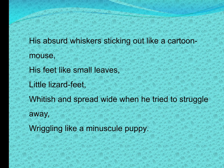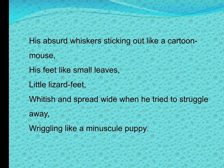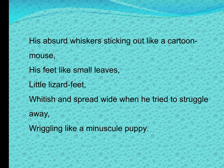The poet describes how the mouse looks. It has been trembling like a quaker. He makes a close observation of the mouse: his whiskers are projecting out and he resembles a cartoon mouse. He observes his tiny feet, which look like those of a lizard. His feet are very tender since it is a baby mouse — tender and transparent like small leaves. Those white feet spread wide when he tried to struggle away, twisting and turning like a baby puppy.